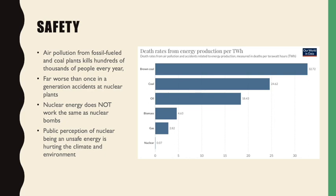Looking at a graph of deaths per unit of energy production: brown coal and coal produce a lot of deaths from pollution-related illness. Nuclear, even including all major disasters, sits down at the very low end — comparable to renewables like hydro, wind, and solar — in terms of deaths per unit of energy produced.